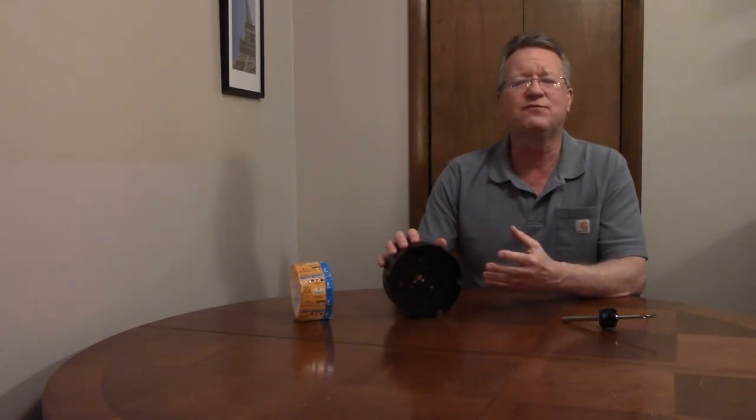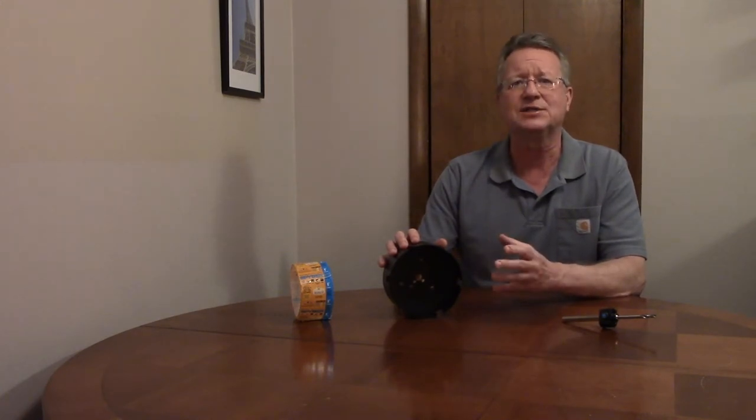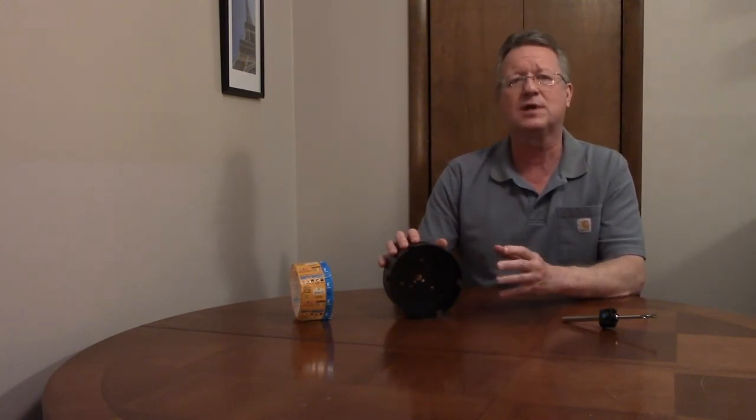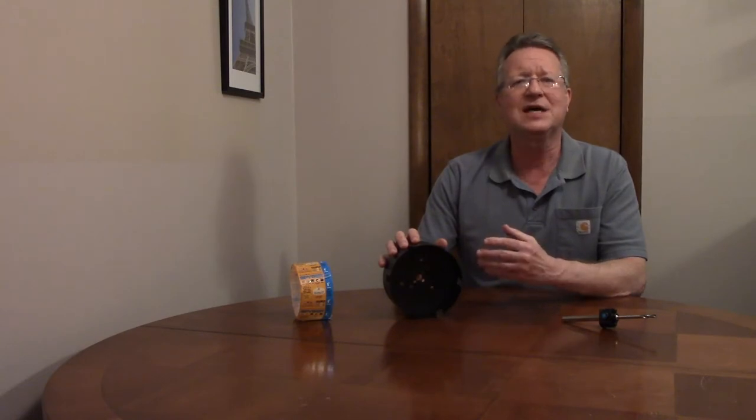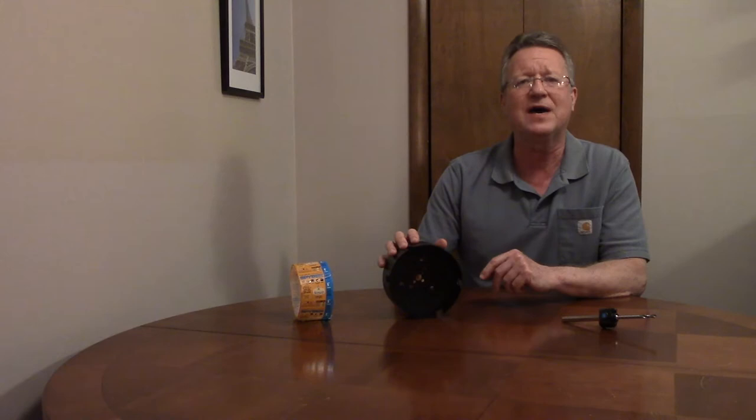Tungsten carbide cuts faster than standard hole saws and is much longer lasting. You're going to get about 10 times more cuts. And these come in sizes from 3 quarters of an inch diameter up to 6 and 5 eighths.